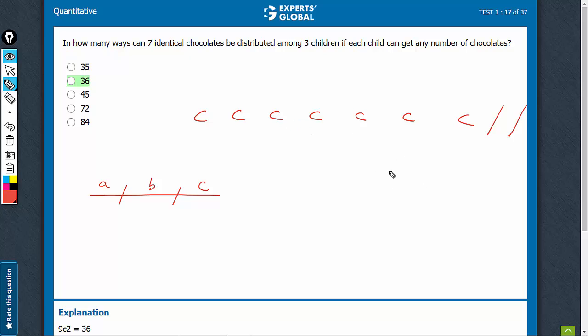So in all, there are 9 entities. They can be shuffled in 9 factorial ways, out of which 7 chocolates are similar and 2 cuts are similar. So this would be the answer.